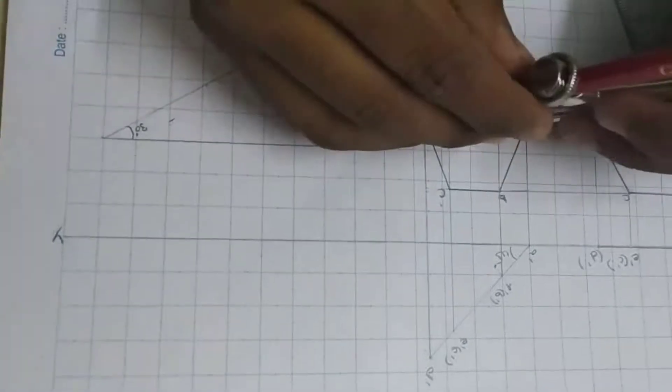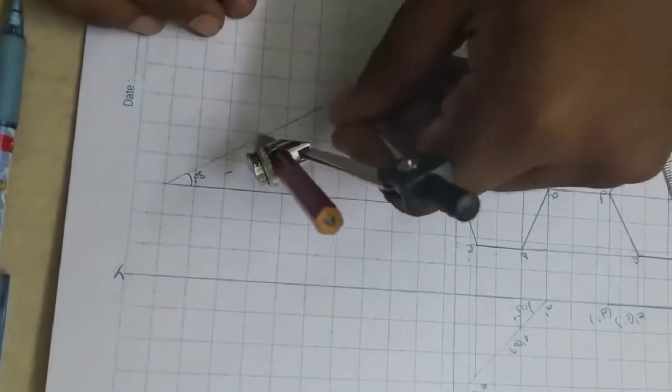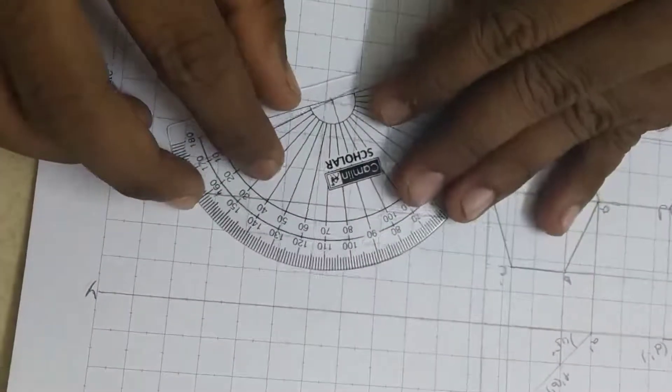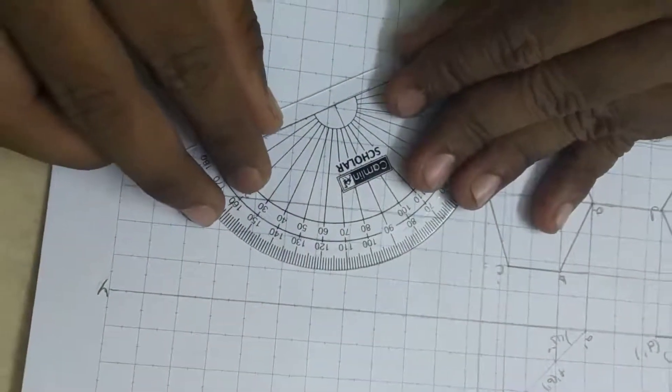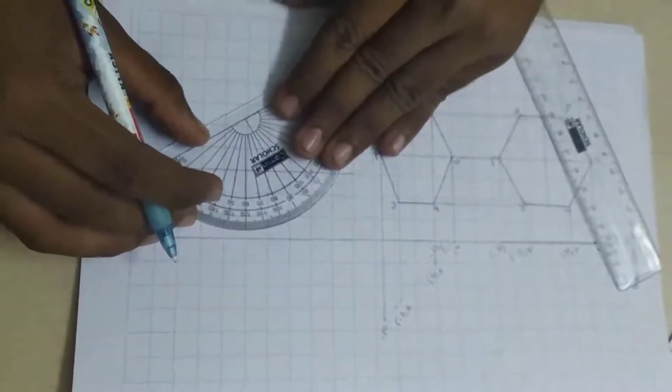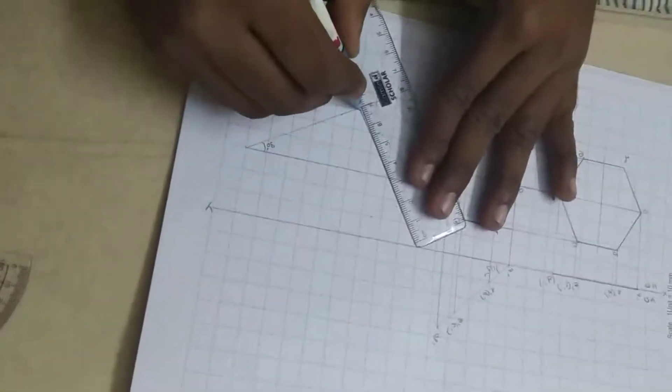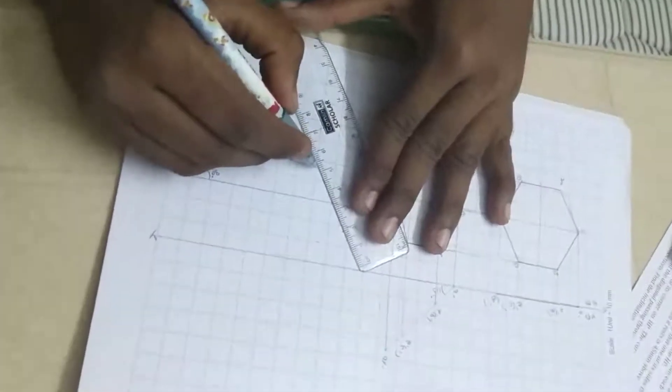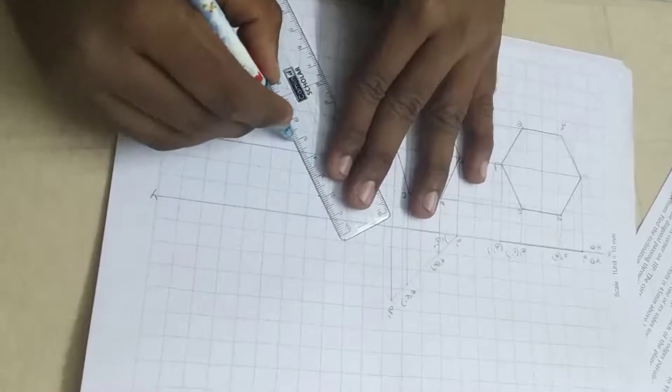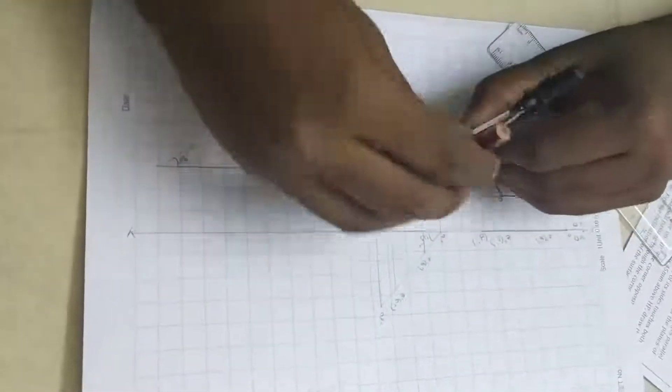And some more. From here to here. Now, by using protractor measure 90 degrees. And draw two perpendicular lines. And draw perpendicular lines. Now, take compass. Measure these two.